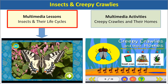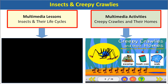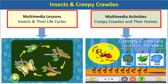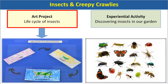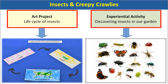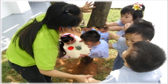Children learn that the butterfly is born as a caterpillar and learn about their habitats through interactive activities. They will then be involved in an art project creating an illustration of the life cycle of insects. As part of the experiential activity, children learn to identify different insects through a discovery of various insects in the garden.